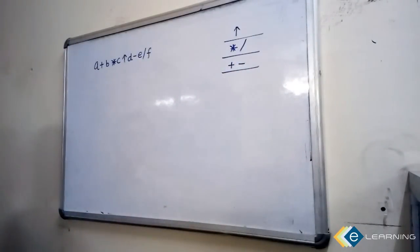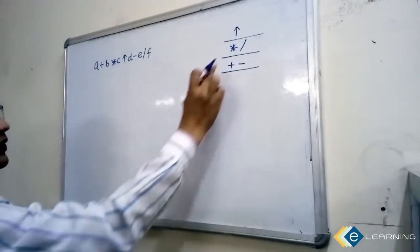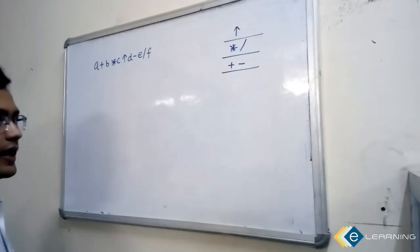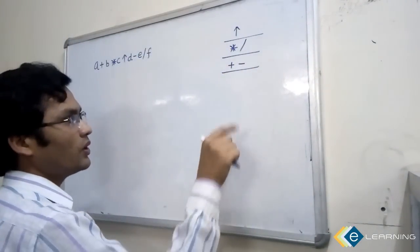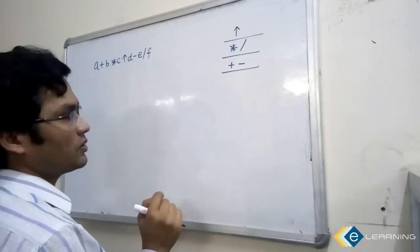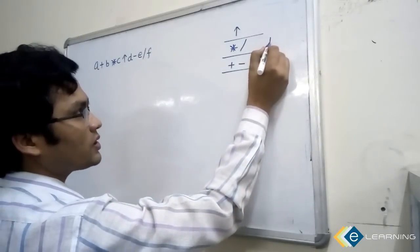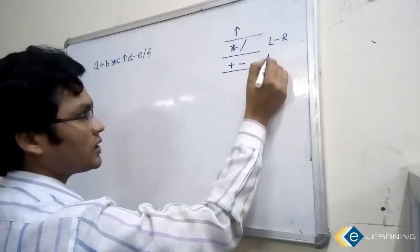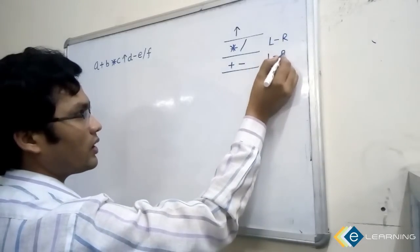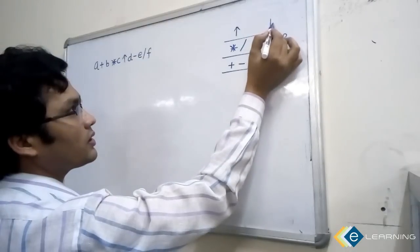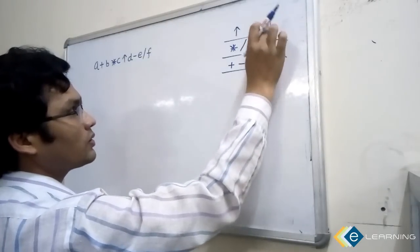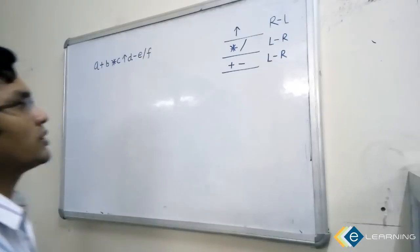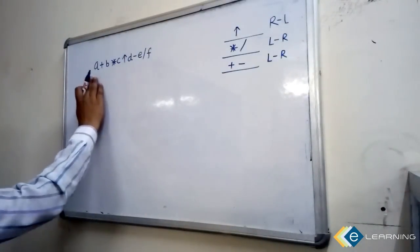When more than two operators have the same precedence, associativity tells you which operator to take first. For plus and minus, associativity is left to right. For star and divide, associativity is also left to right. But for power, associativity is right to left.